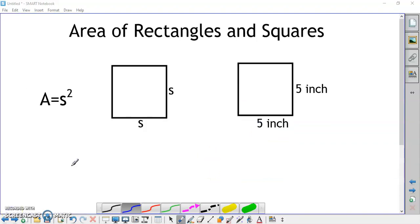Next, we are going to find the area of a square. A square is like a rectangle, except all four sides are the same length. Let's call the side length S.